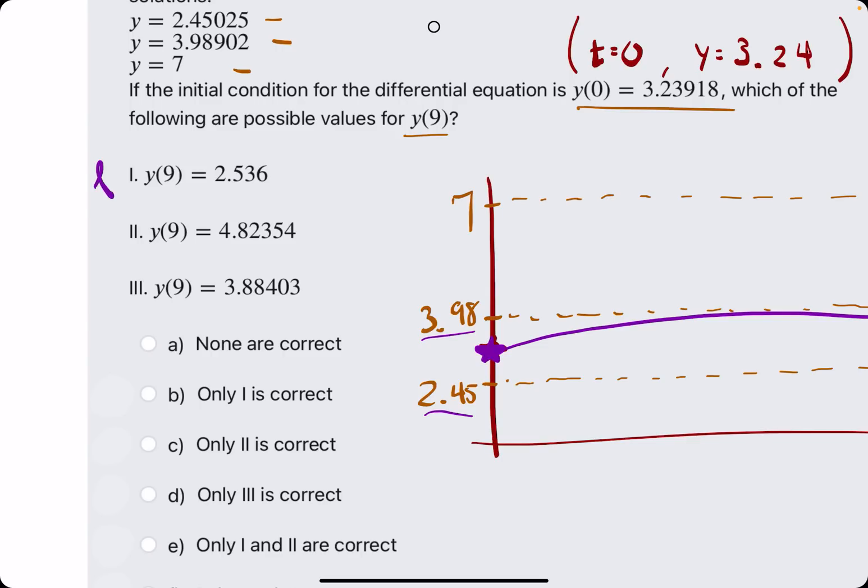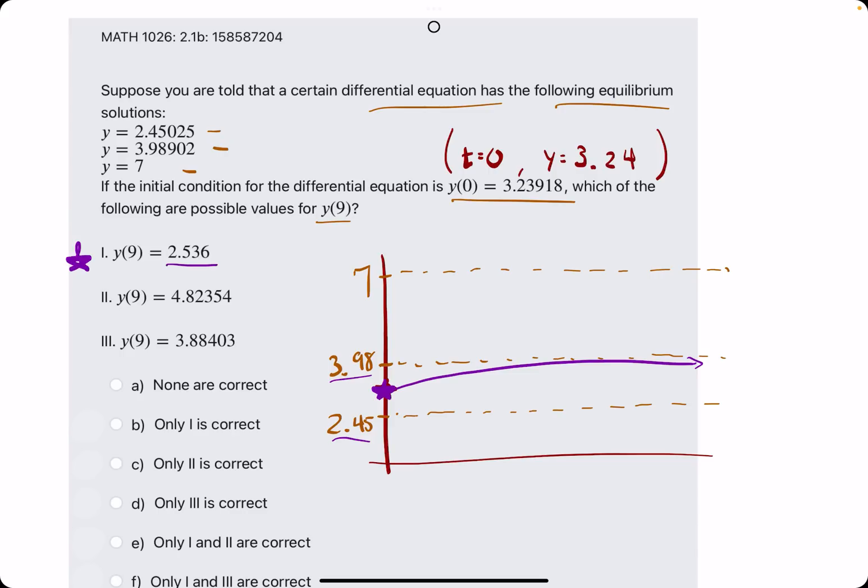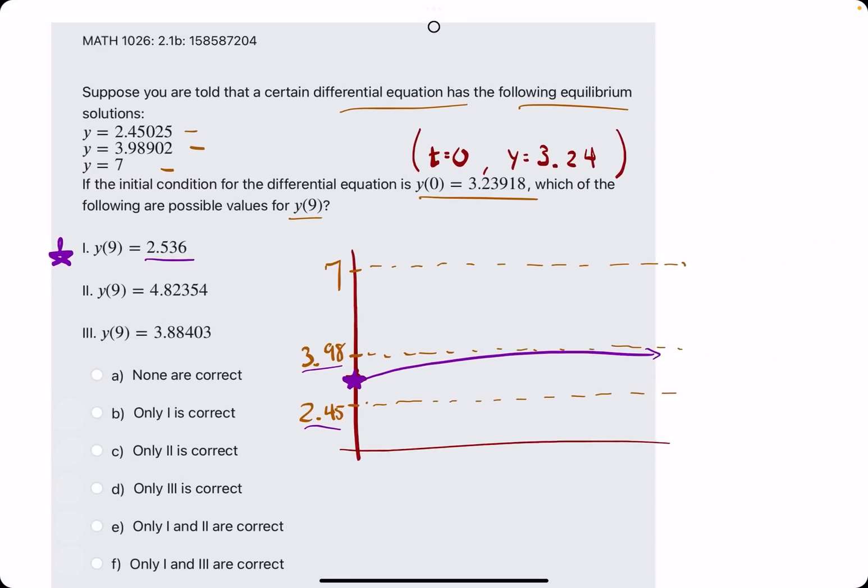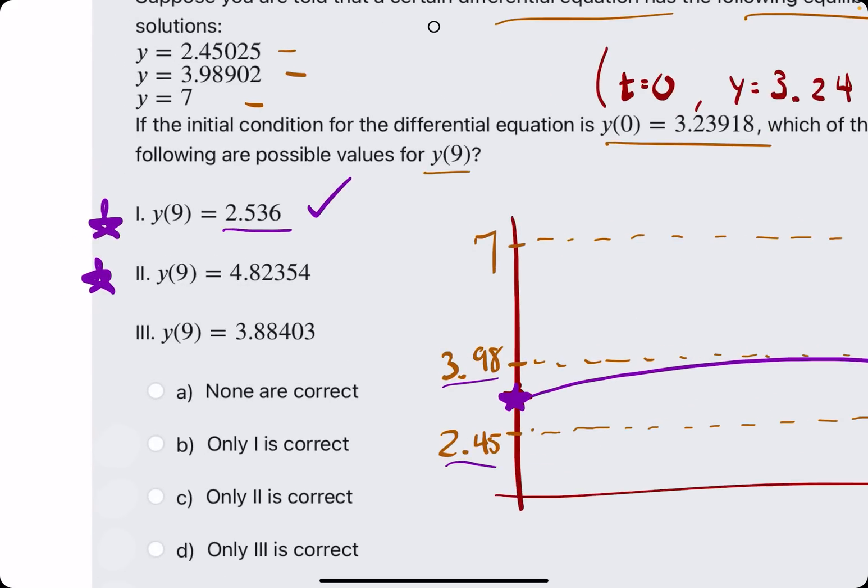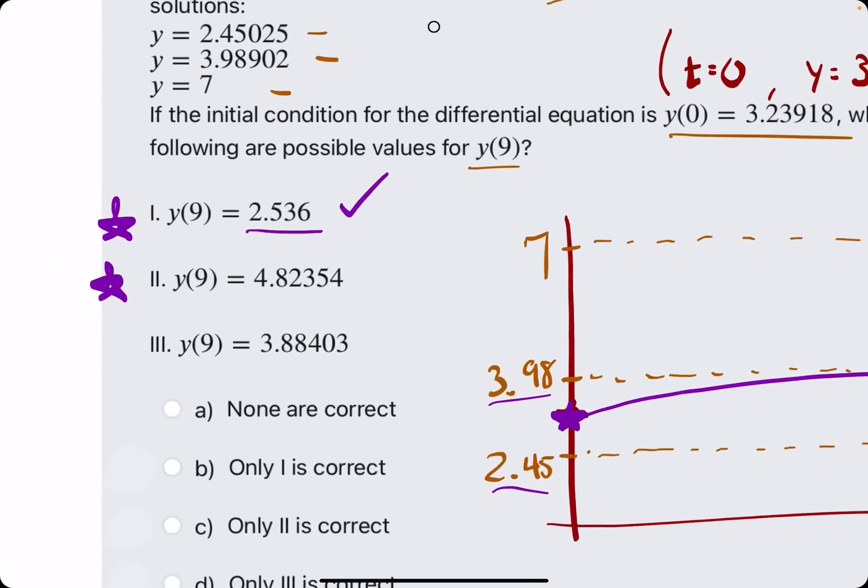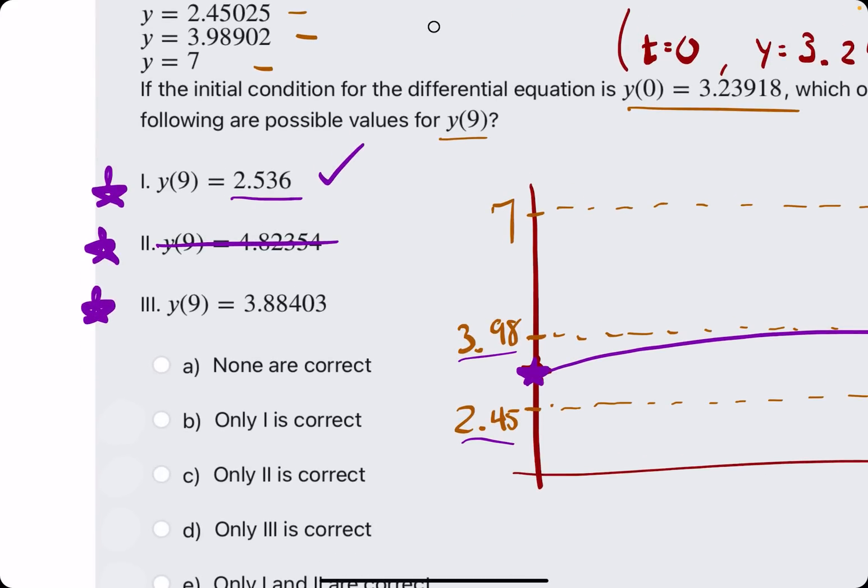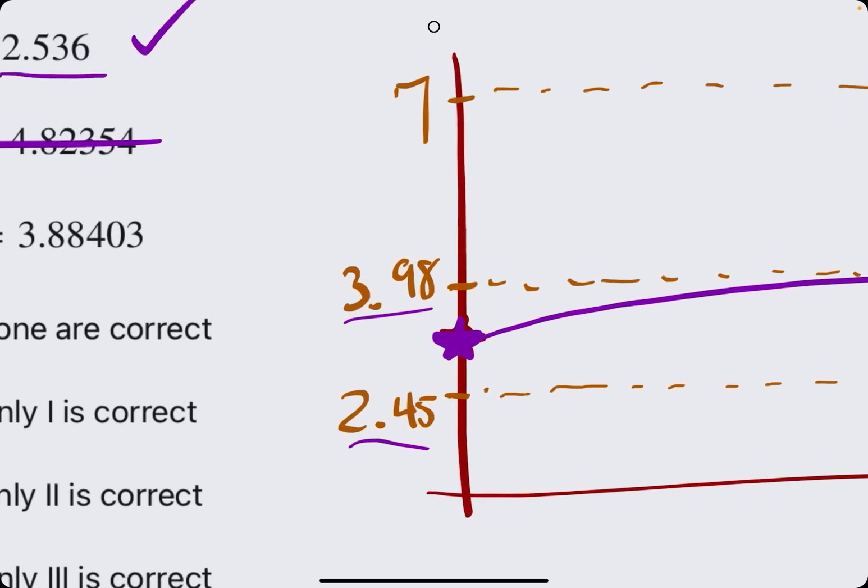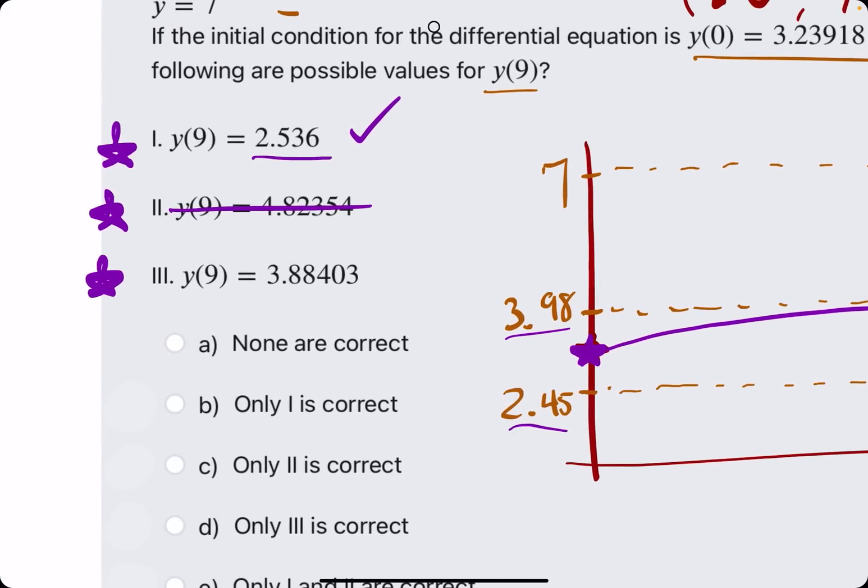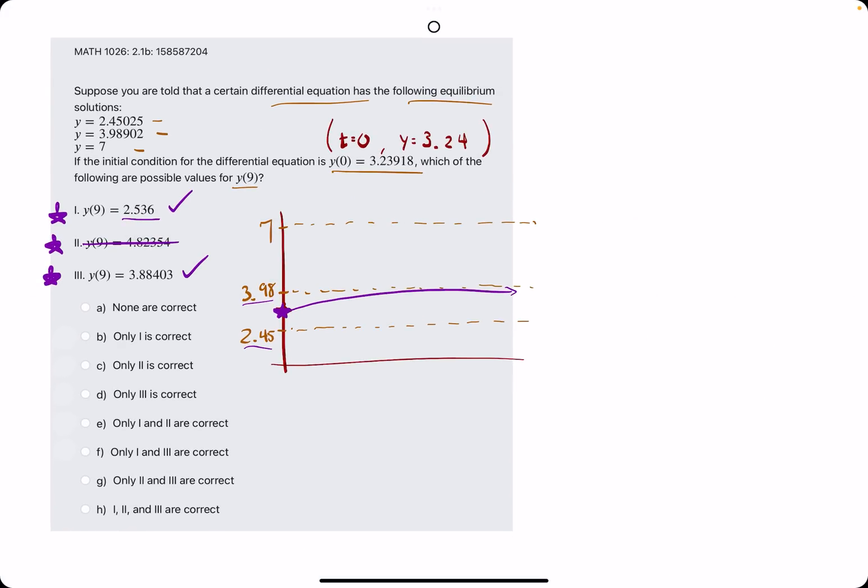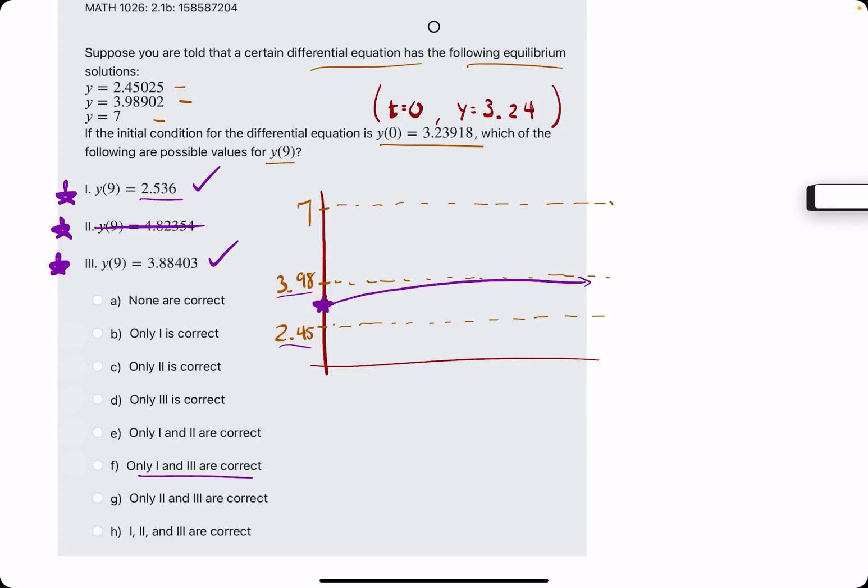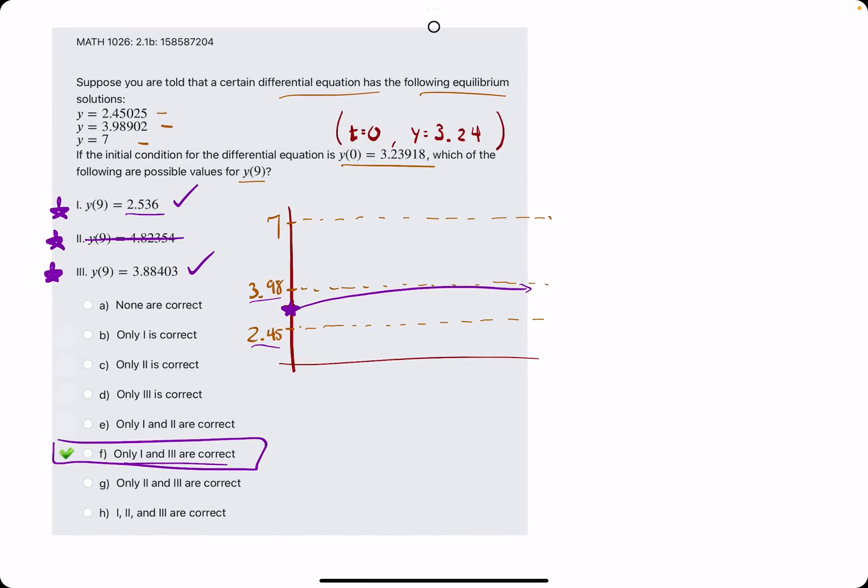So we are just choosing the y values that are between those two y values. So 2.5 is between these two values, so that checks out. 4.8 is much greater than 3.98, so it's outside our window, so that cannot be the y value at 9. Then number 3, 3.88 is still in the window between 2.45 and 3.98, so that checks out. And that's how we go about that problem. So 1 and 3 are correct, so F is our answer in this case.